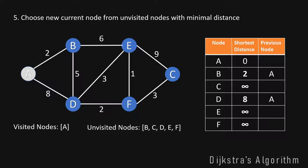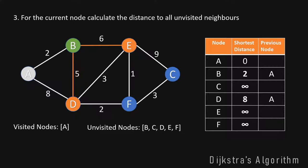For node B we go back to step 3 to calculate the distance to all unvisited neighbors of B. The unvisited neighbors of B are E and D. Since B has a current distance of 2, we add this 2 to the weight of the edges to E and D. Let's first look at node E.